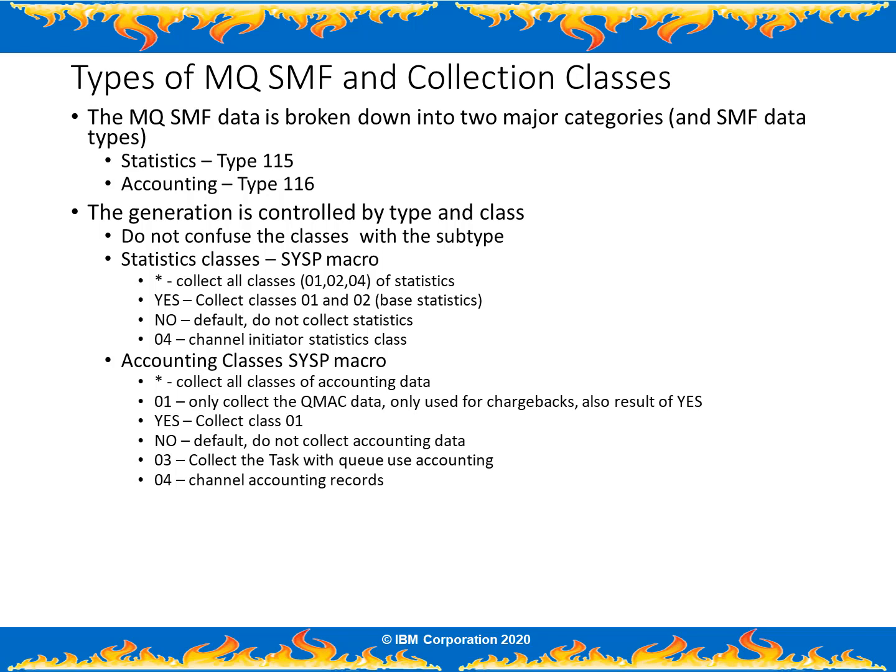The first type of data is the statistics data, the Type 115 records. The second is the accounting data, also known as the Type 116 records. Information gathering and generation of these records is controlled by the type — stat or accounting — and the class. The class is used to control the components that are going to be included and the level of detail that may be generated. The MQ statistics classes are three. One and two are the general QManager statistics, including information about resources like buffer pools for messages, the coupling facility, the log manager, and many others. Class four is the channel initiator statistics, which include information about the high watermark of channel utilization, adapter and dispatcher task use, storage consumption, etc.